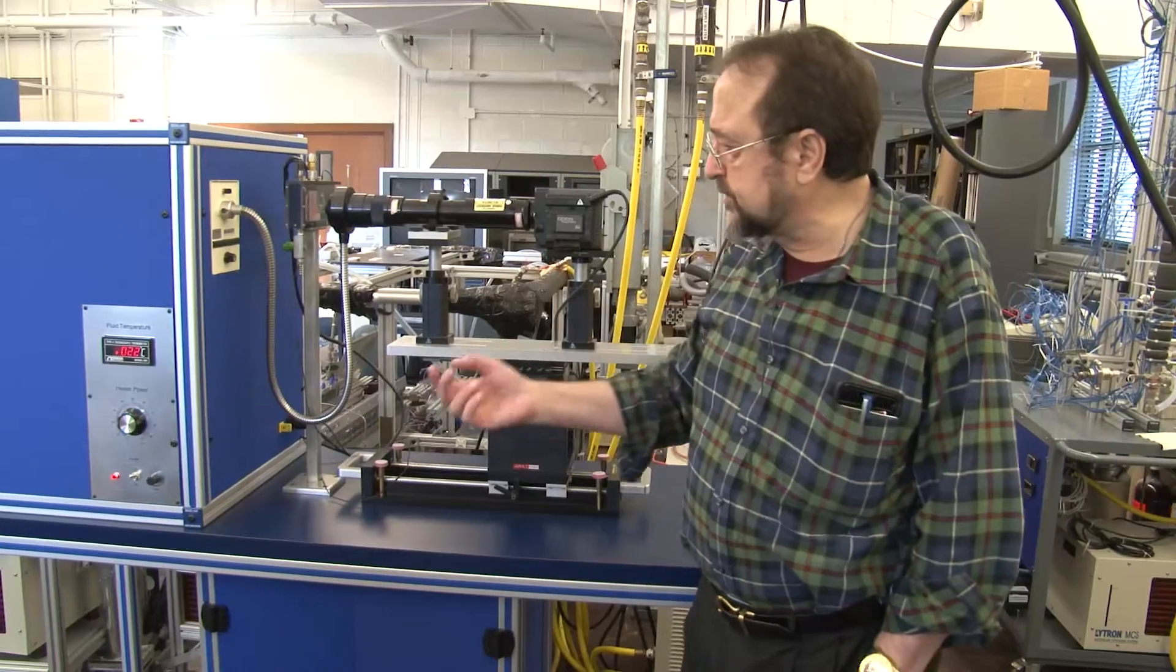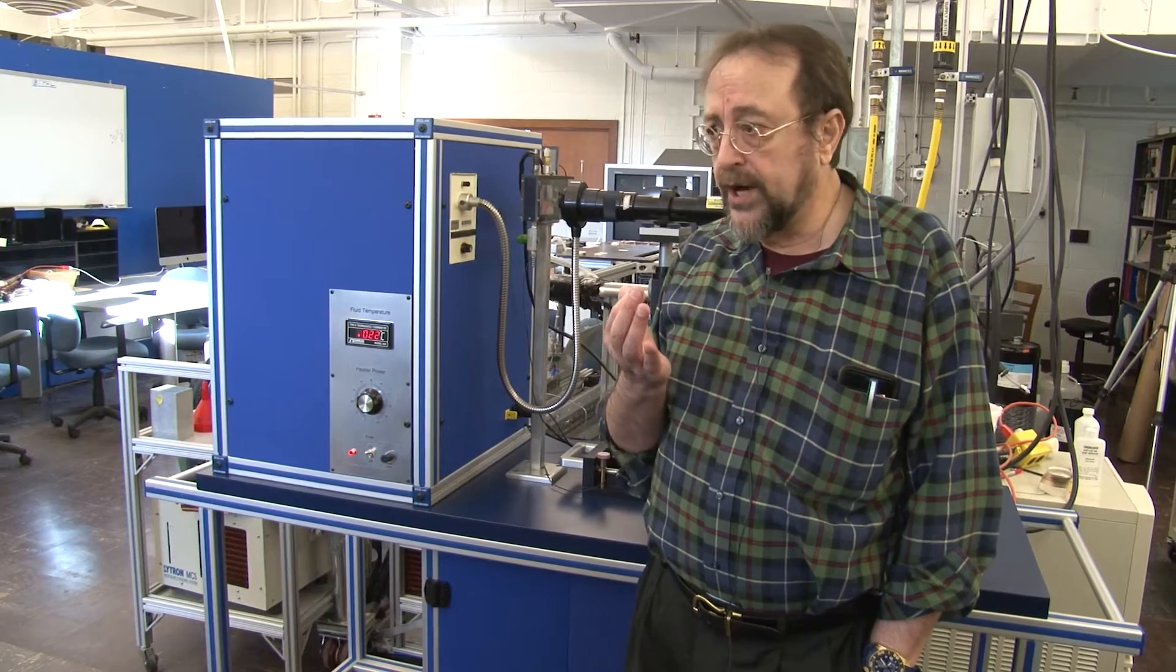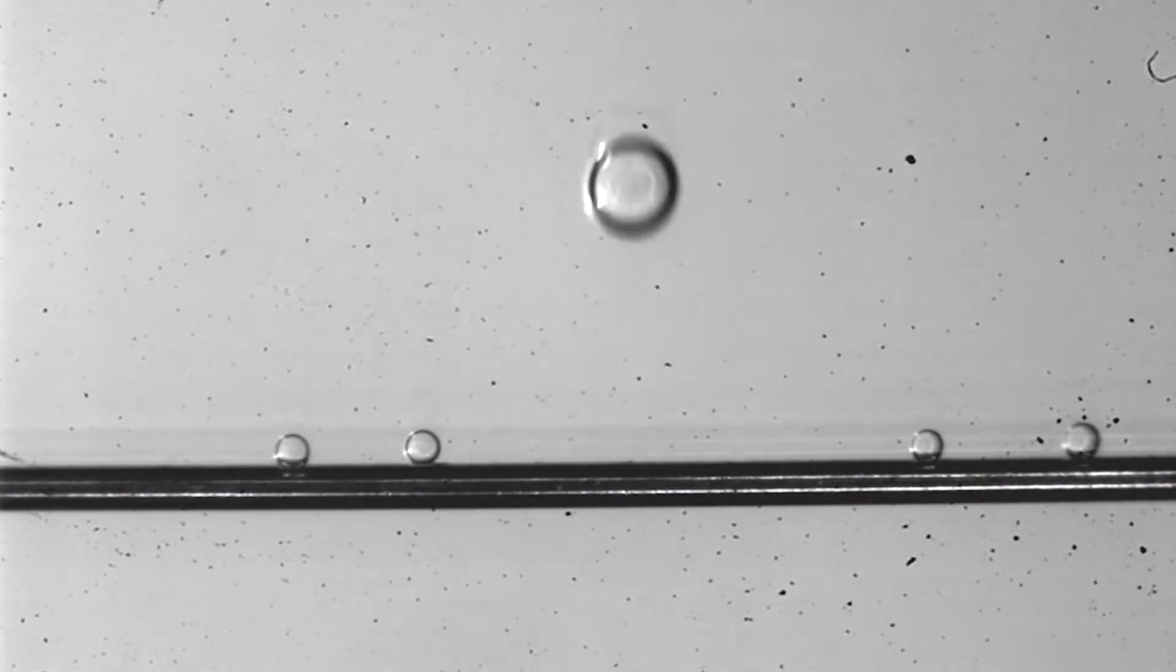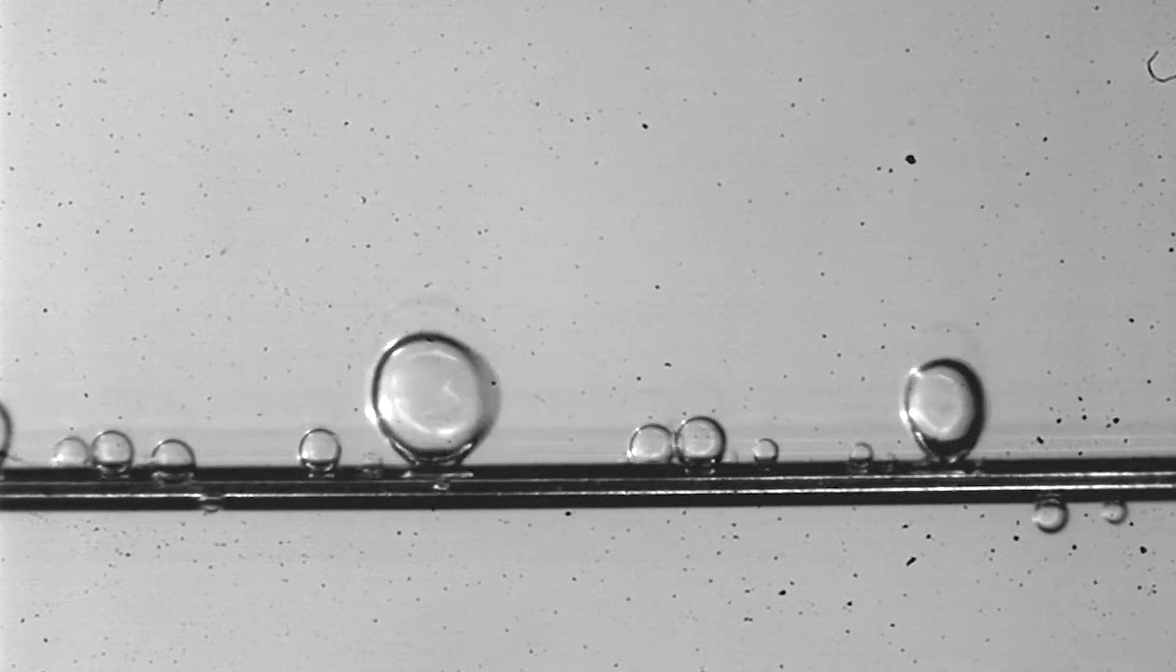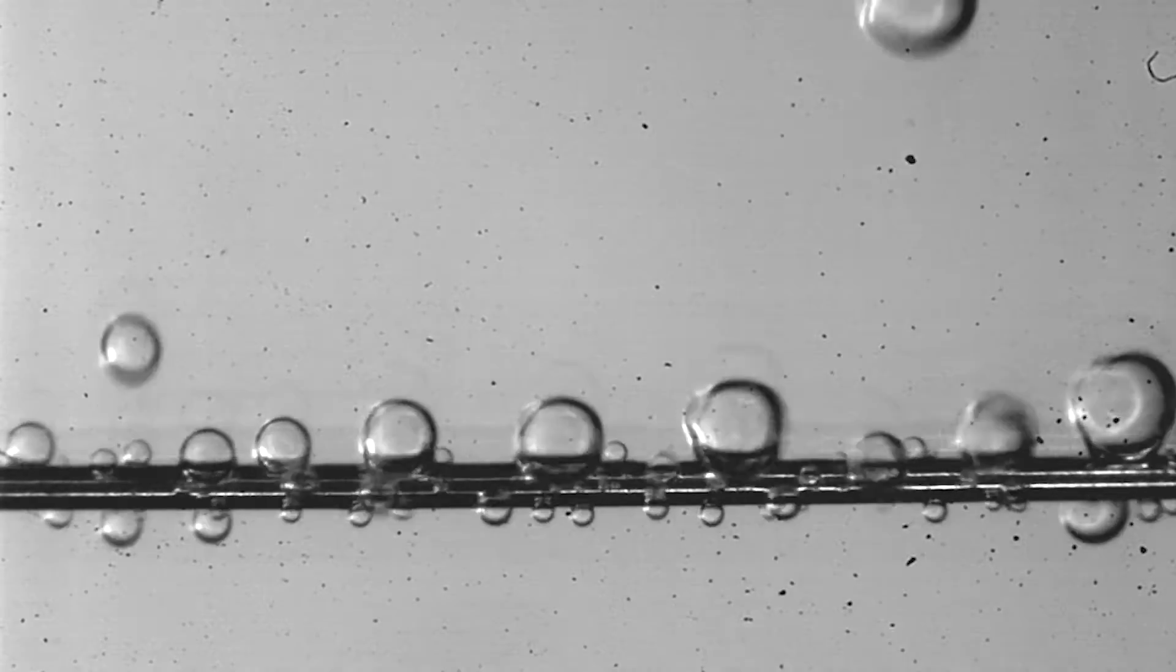The experiment is initiated by just increasing power input into the wire. The wire is resistive, meaning by supplying electrical current we're able to produce heat within the wire itself and that's what boils the fluid.